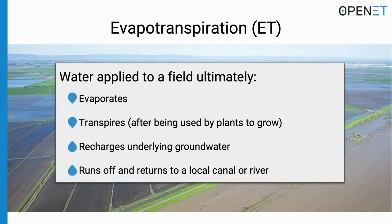Water applied to a field ultimately goes to a few places: it can evaporate or transpire — those two together are evapotranspiration, the total amount of water used by crops and vegetation as they grow. In contrast, some water can recharge underlying groundwater or run off and return to a local canal or river, remaining available for reuse downstream. But water consumed through evapotranspiration is no longer available for other uses in the basin — it is removed from the water supply and often referred to as consumptive use.